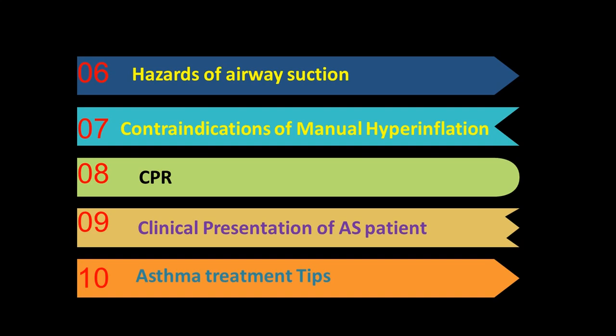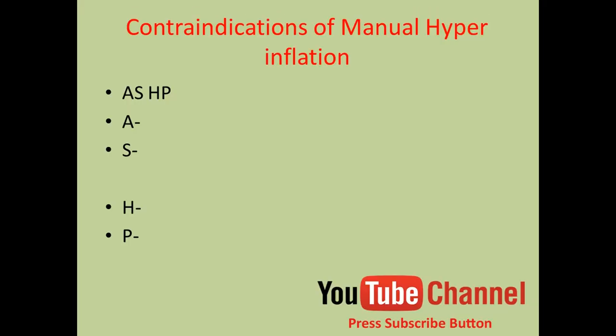The next group of mnemonics includes: contraindications of manual hyperinflation, CPR, clinical presentation of ankylosing spondylitis patient, and asthma treatment tips.